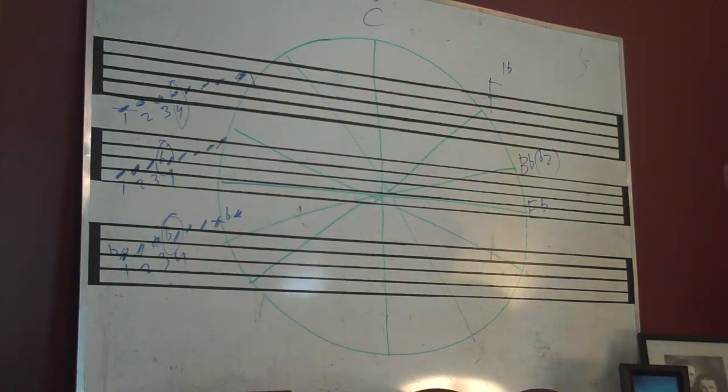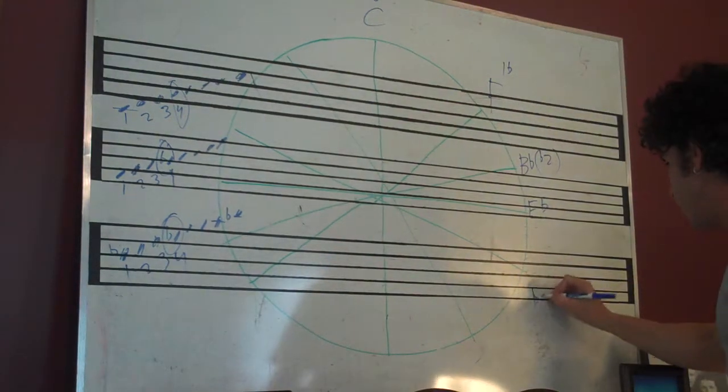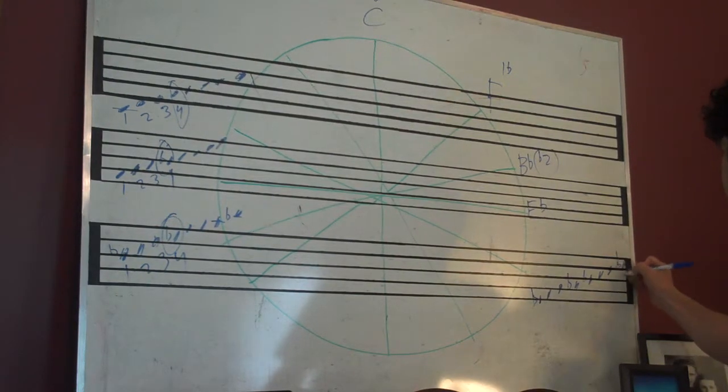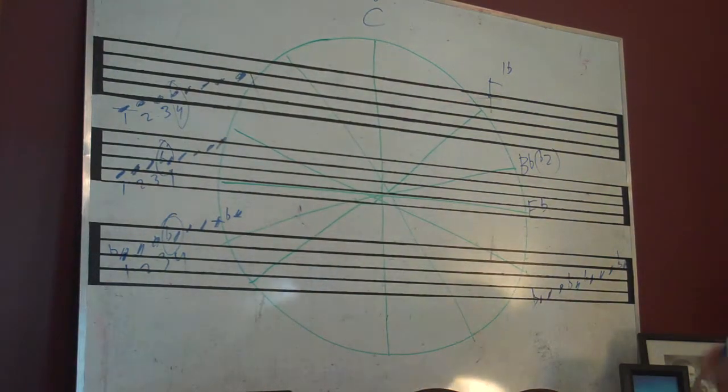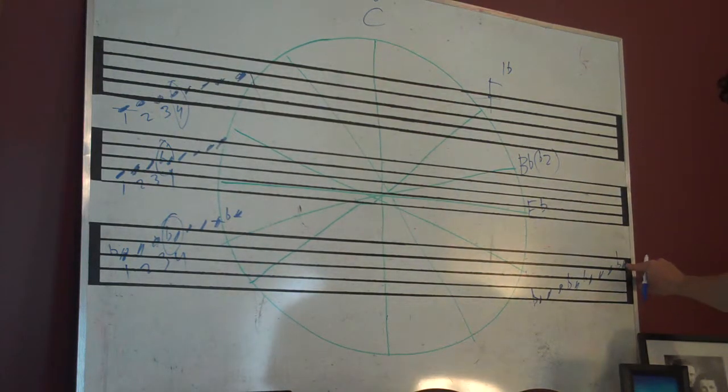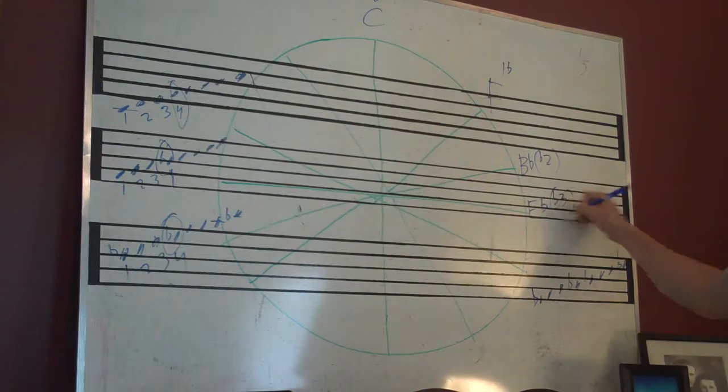You see where we're going with this now. E flat major scale: E flat, F, G, A flat, B flat, C, D, E flat. How many flats are there? E flat, A flat, B flat. So, three. We have E flat up here twice, so you can't count that, right? There are three flats in E flat.